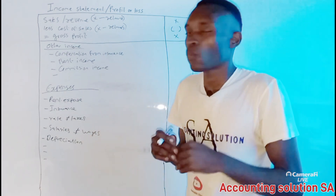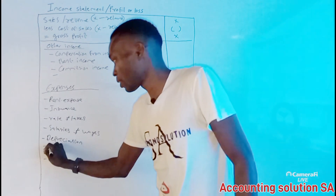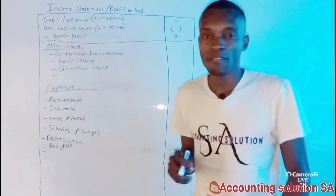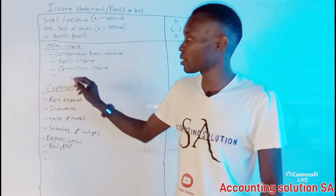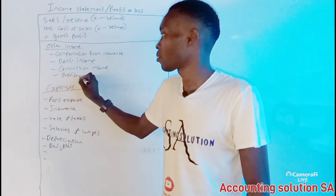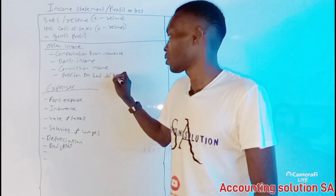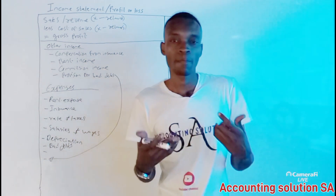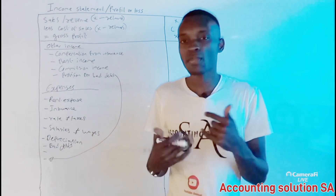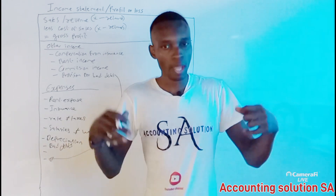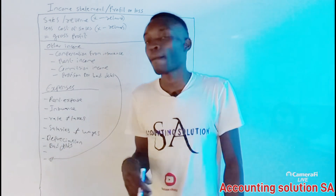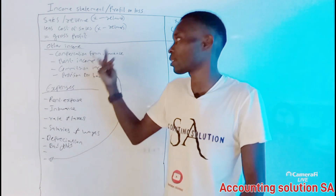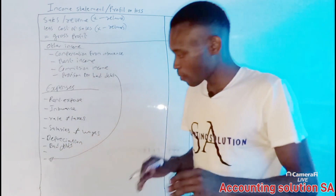One important item is provision for bad debts. It can appear as an adjustment to sales or as an expense. If we find that most clients are not going to pay us, it's a loss — which means it's an expense. But if clients we previously doubted are now paying us, that becomes other income. So the treatment depends on what actually happened.